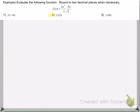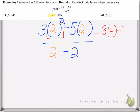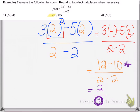For the next example, we replace x with 2. We do the exponent first: 2 to the second power is 4, then multiplication in the numerator. The denominator gives 2 minus 2, which is 0. As soon as we see the denominator is 0, we know — without even computing the numerator — that the answer is undefined. We cannot divide by 0.